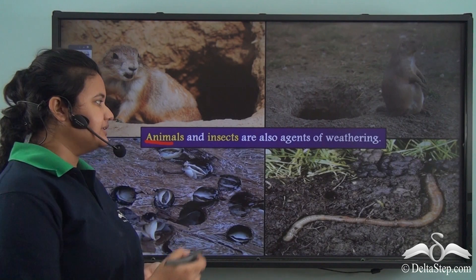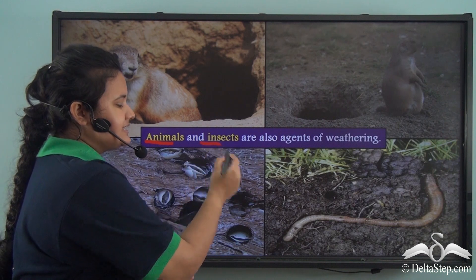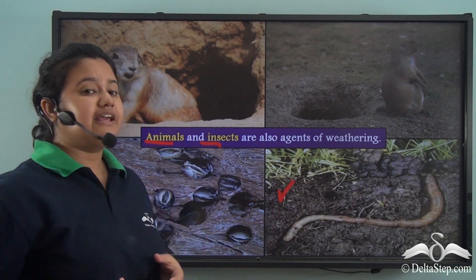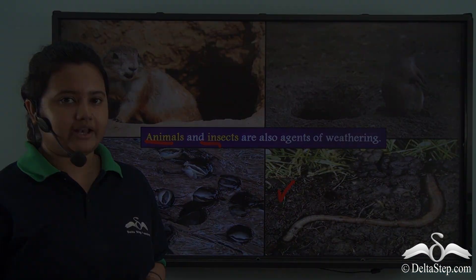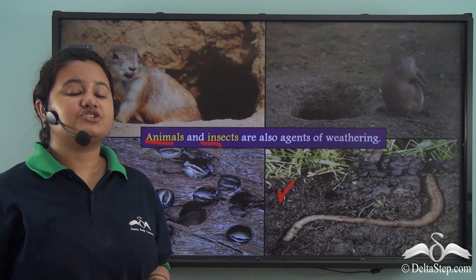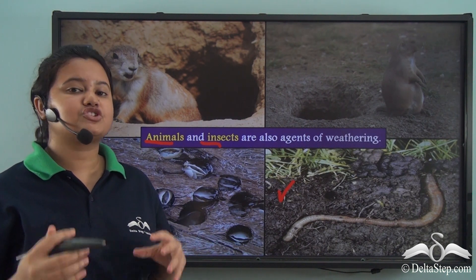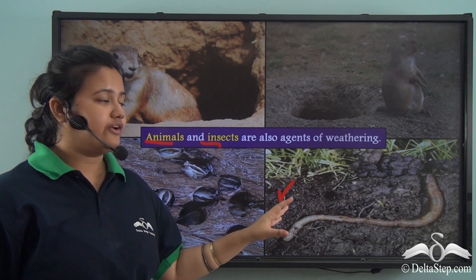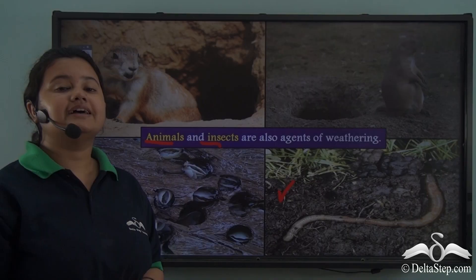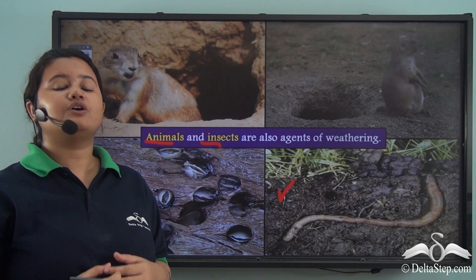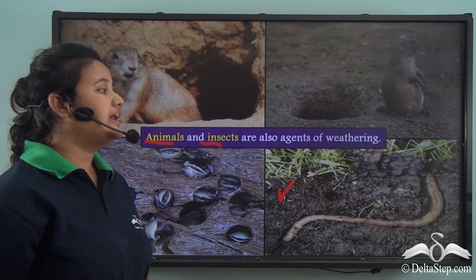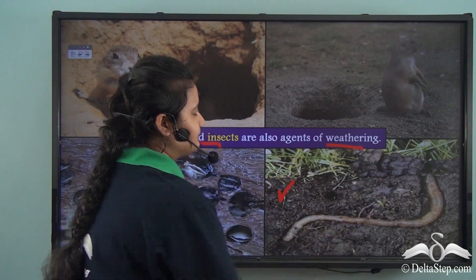Apart from animals, insects like earthworms live in soil and drill holes in the ground, which causes the rock to disintegrate. Thus insects also play a vital role in the weathering of rocks.